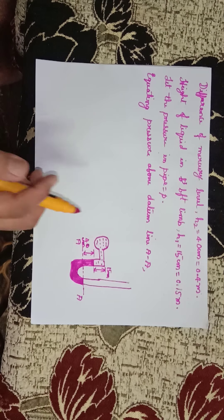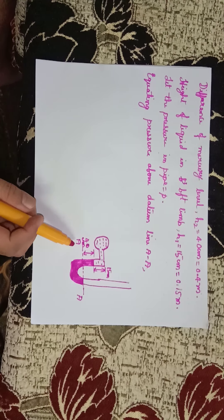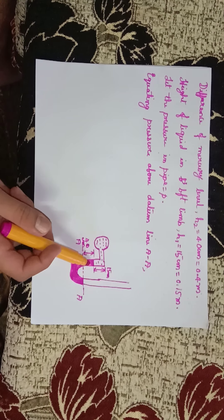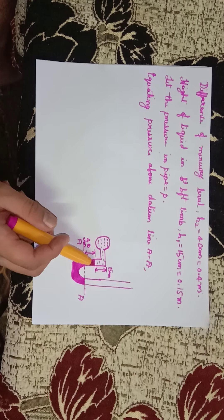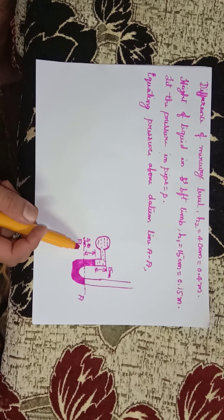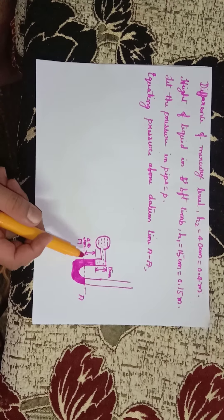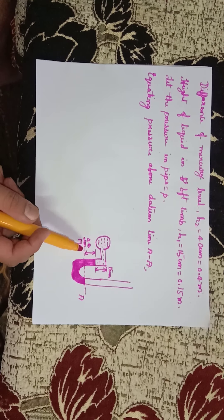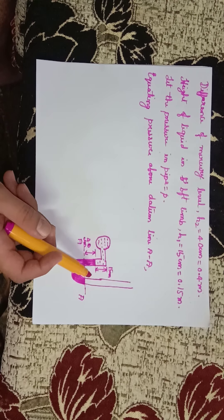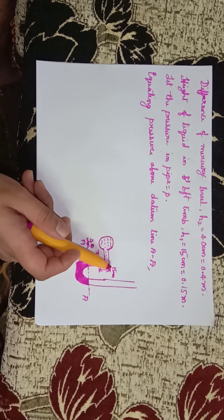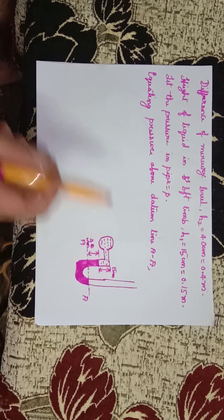Equating pressure above datum line A-A. This is the figure; this is line A-A. The distance from this point to line A-A is 40 centimeters, and from this point to here it is 15 centimeters.